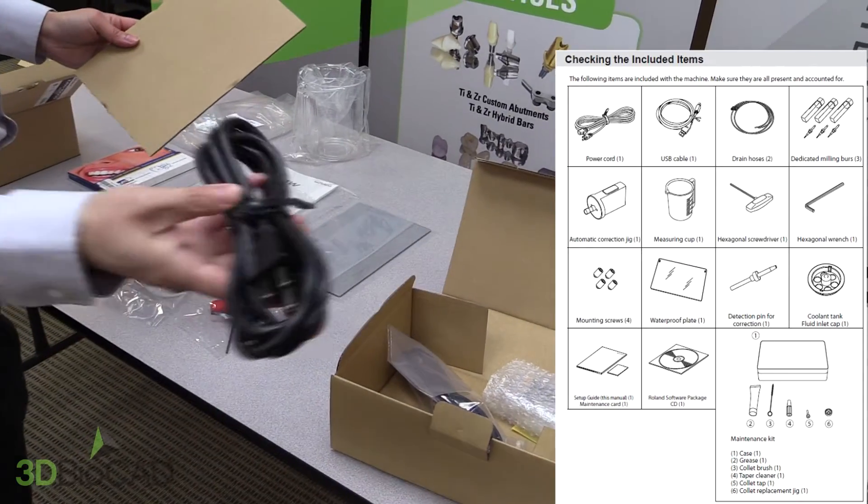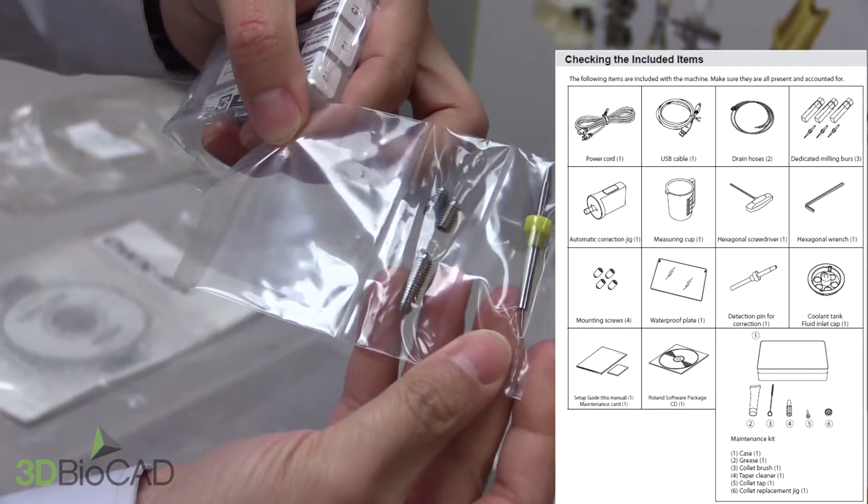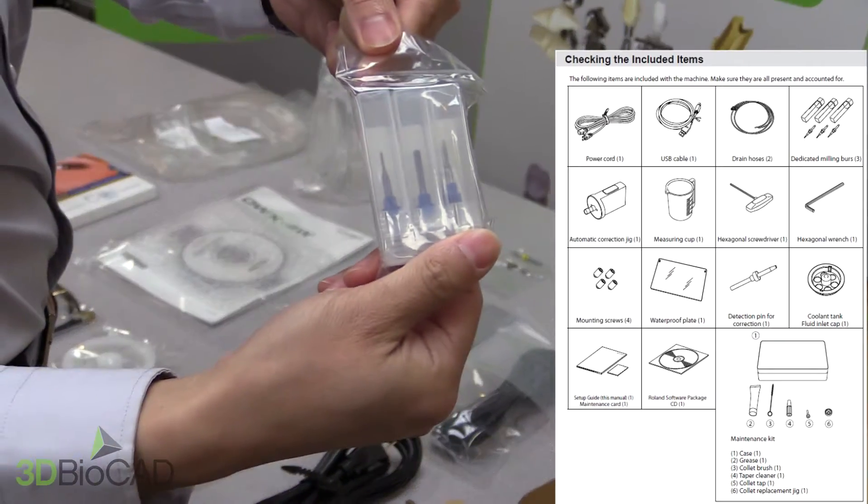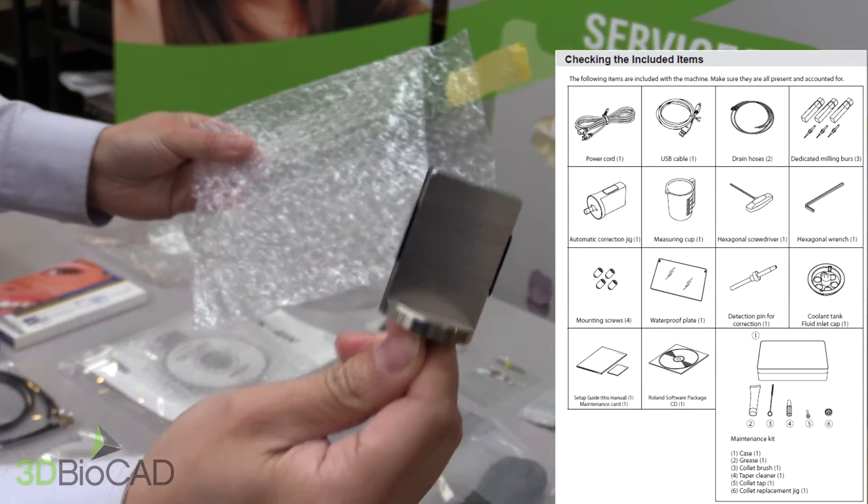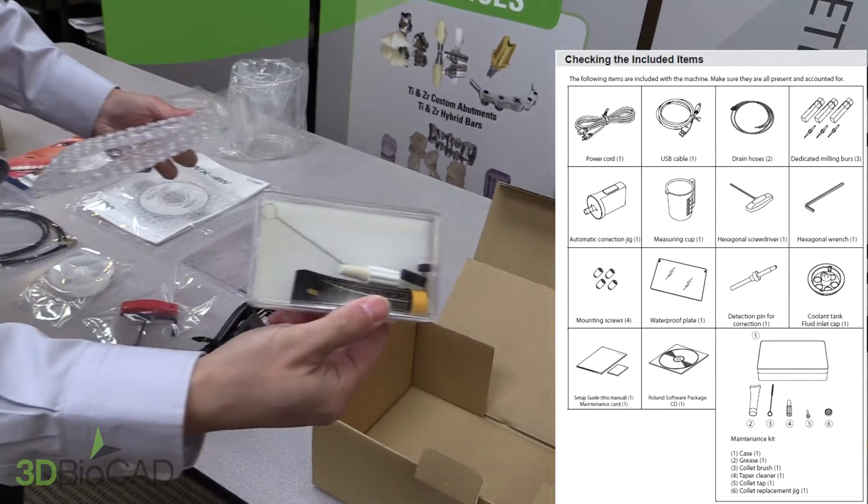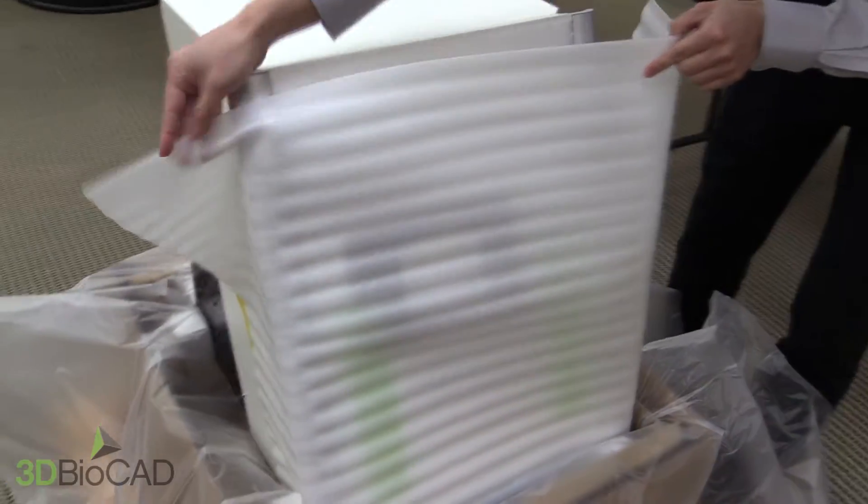You'll see the power cord and USB cables, four mounting screws. There will be three milling burrs. You'll see an automatic correction jig and the maintenance kit. After you ensure all components are included, you can unwrap your machine.